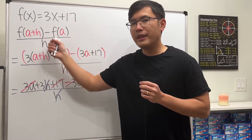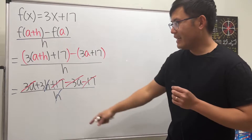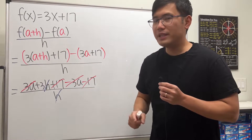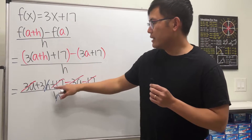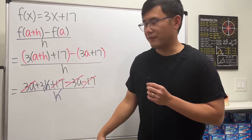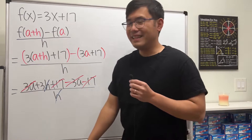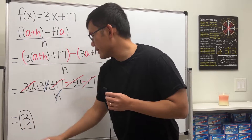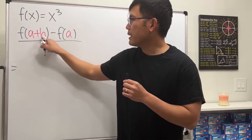Here's a small tip: whenever we do the difference quotient, the h on the bottom will always get cancelled out. Just trust that — and it did happen here. Be really careful to collect like terms first, and sometimes you might have to factor to cancel the h. The answer here is just 3.